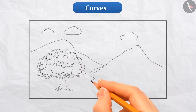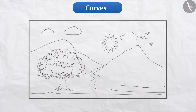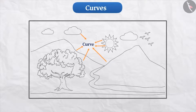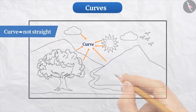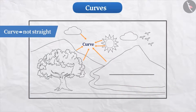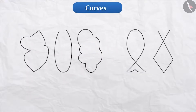Just as we have drawn a tree here, similarly we can draw mountains, clouds, waterfalls, road, etc. A continuous line drawn on paper without picking up the pencil from paper is called a curve. However, a curve is usually a zigzag line, but it is not necessary that a curve is always a zigzag line. If we make a straight line on paper without picking up the pencil, then also it is known as a curve.